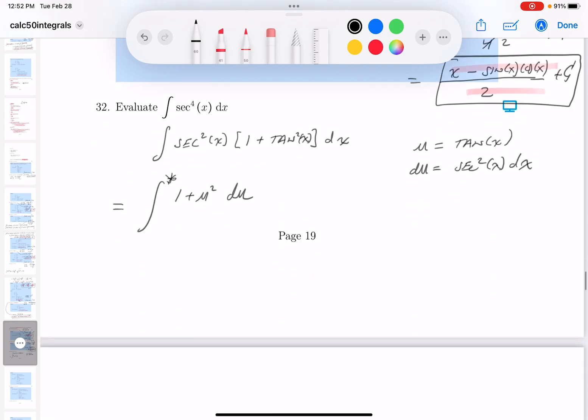What do I get over here? Let's write this down. This will be equal to u plus u cubed over 3 plus some constant of integration.